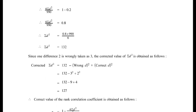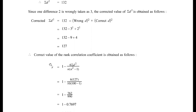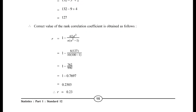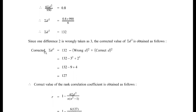The final step is to find correct R. Correct R = 1 minus 6 into correct Σd² upon n into (n²−1). Substituting: 1 minus 6 into 127 upon 10 into (100−1) = 1 minus 762/990, which gives correct R = 0.23.